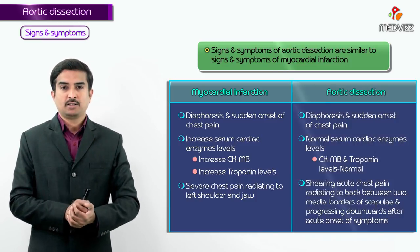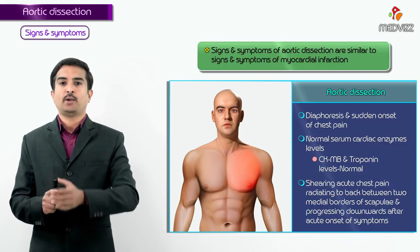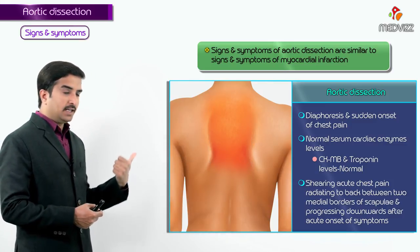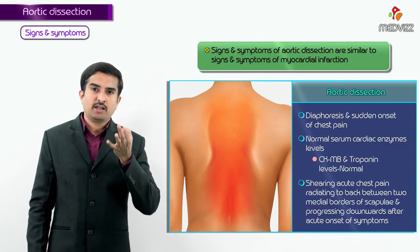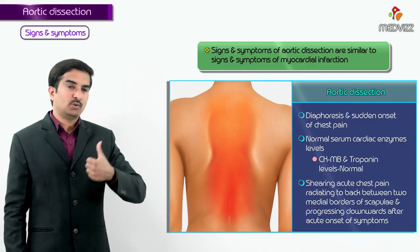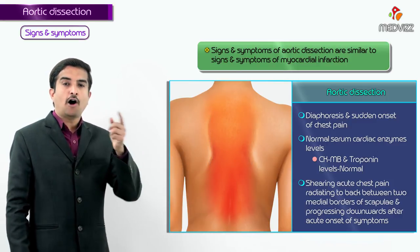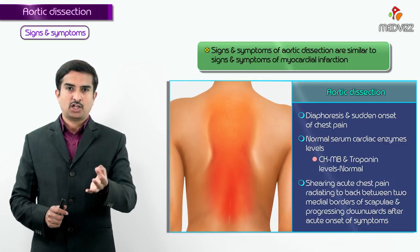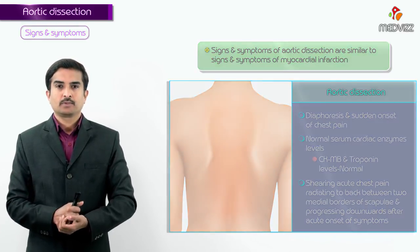In aortic dissection, the severe tearing chest pain presents with diaphoresis and often radiates to the back — between the two medial borders of the scapulae — and migrates inferiorly as the dissection progresses. This progressive downward radiation distinguishes aortic dissection from acute myocardial infarction, where pain typically radiates to the left shoulder and jaw.